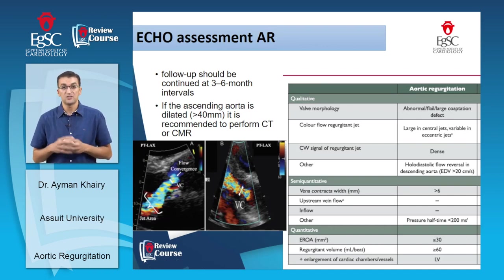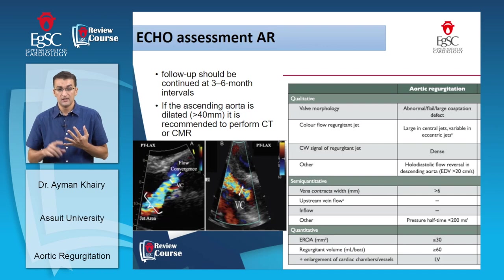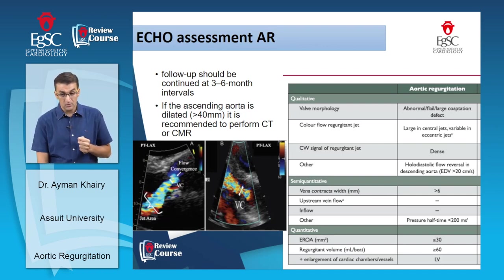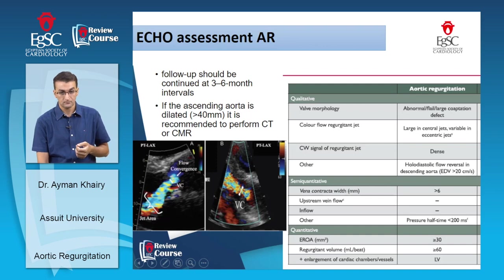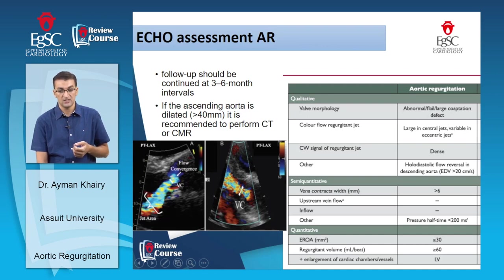Assessment of regurgitant lesions uses three methods: qualitative, semi-quantitative, and quantitative — the semi-quantitative and quantitative being most important. Qualitative parameters include valve morphology, color flow jet width, continuous wave Doppler signal density of the regurgitant jet, and diastolic flow reversal in the descending aorta. Semi-quantitative includes vena contracta and pressure half-time. Quantitative includes effective regurgitant orifice area (EROA), regurgitant volume, and cardiac chamber enlargement.